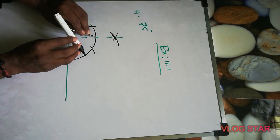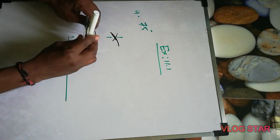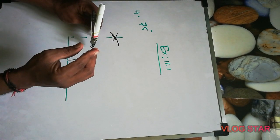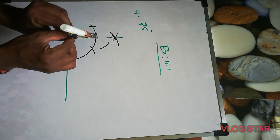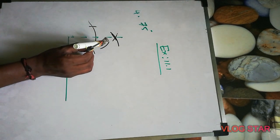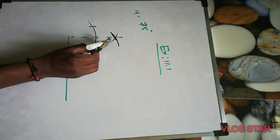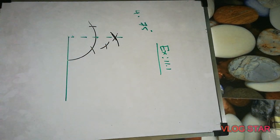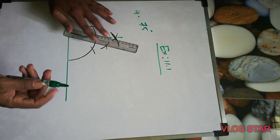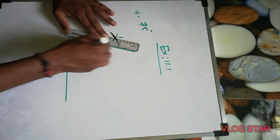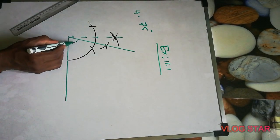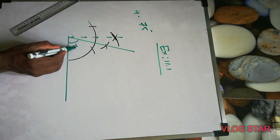From the 60 degree arc, take more than half. From here cut it, then from here cut it again, and from this point cut again. If we join that intersection point to the origin, that is 75 degrees.